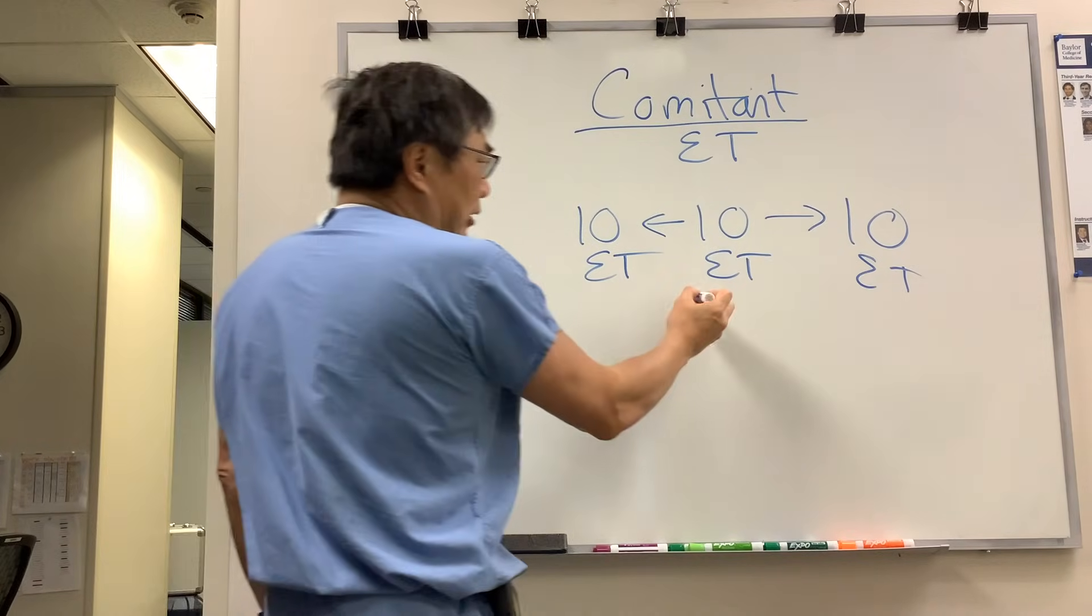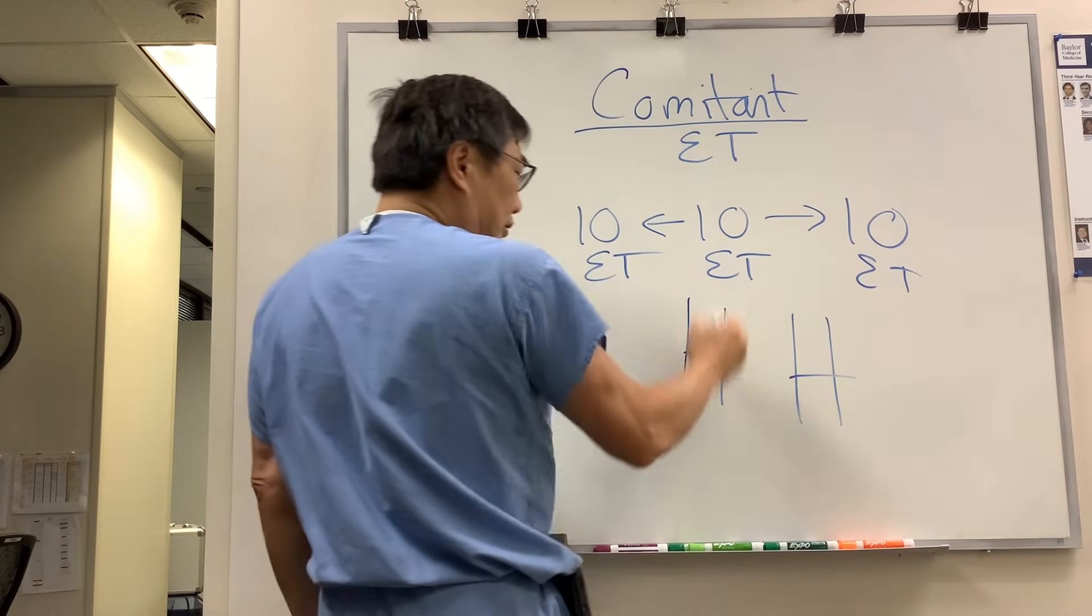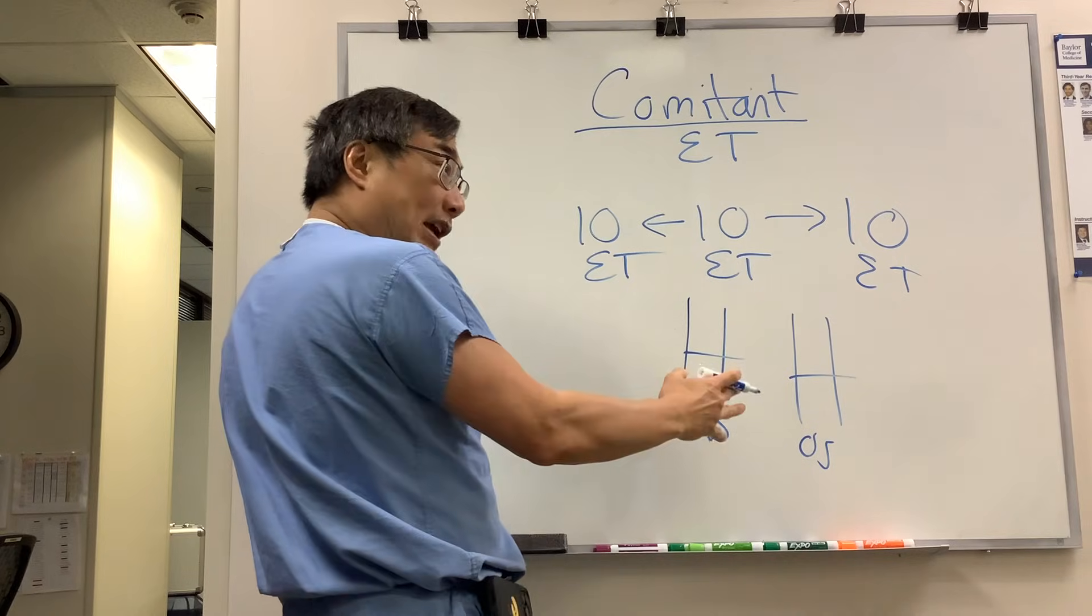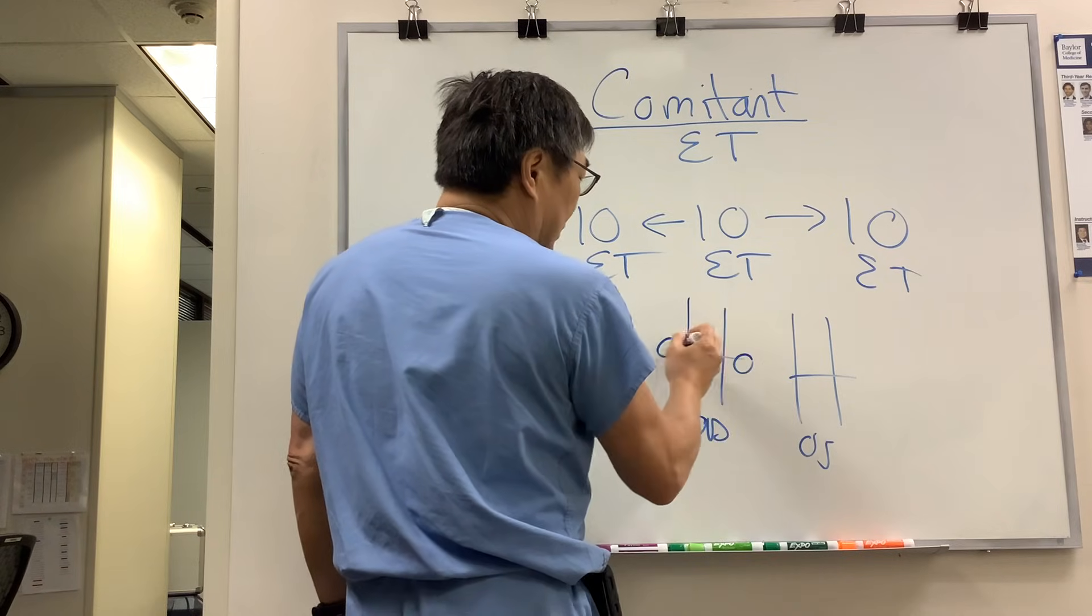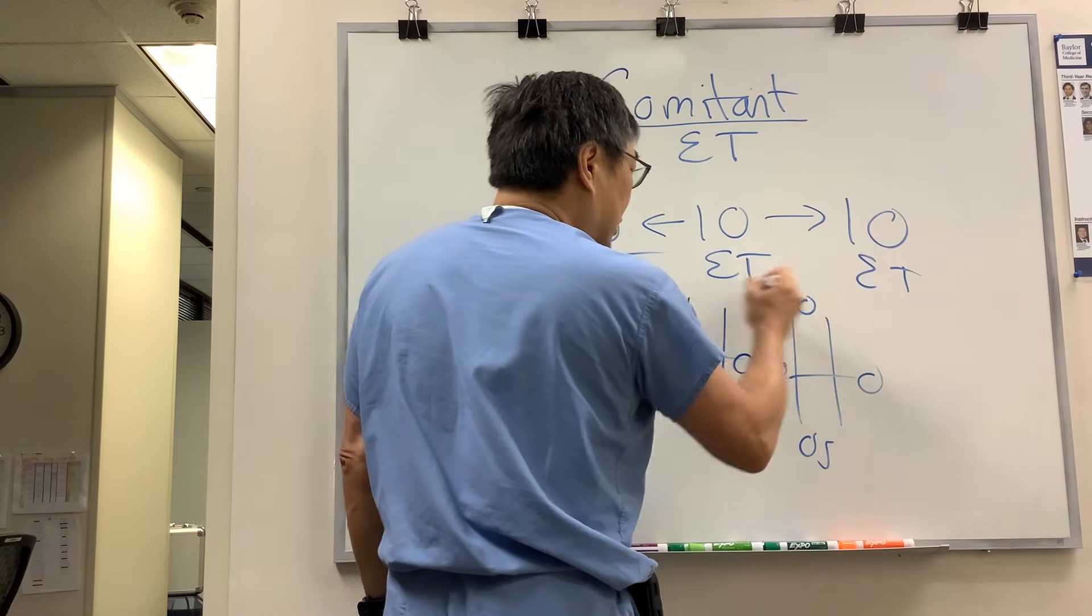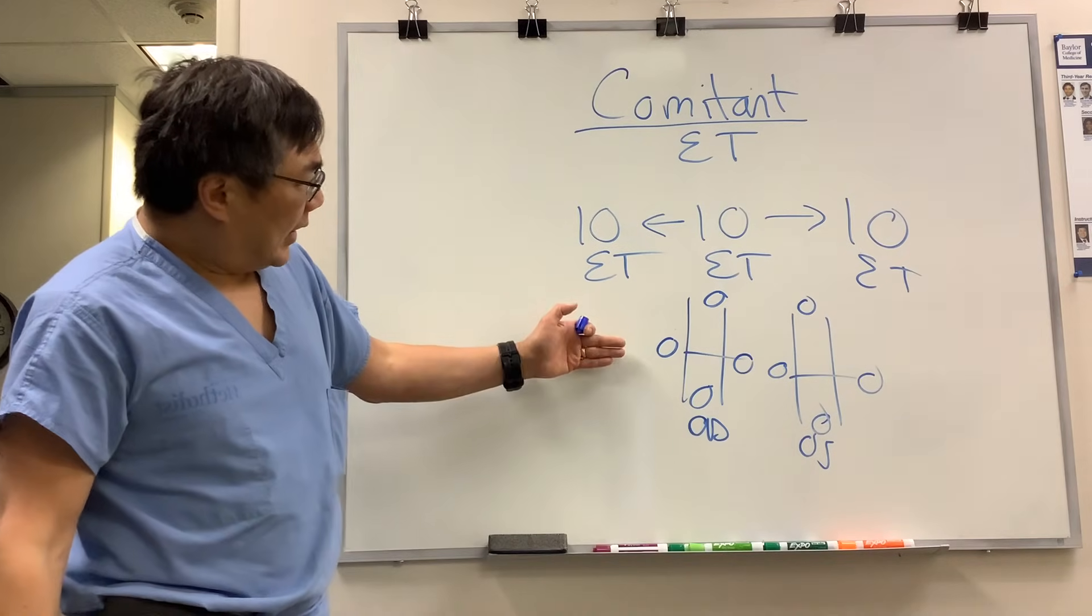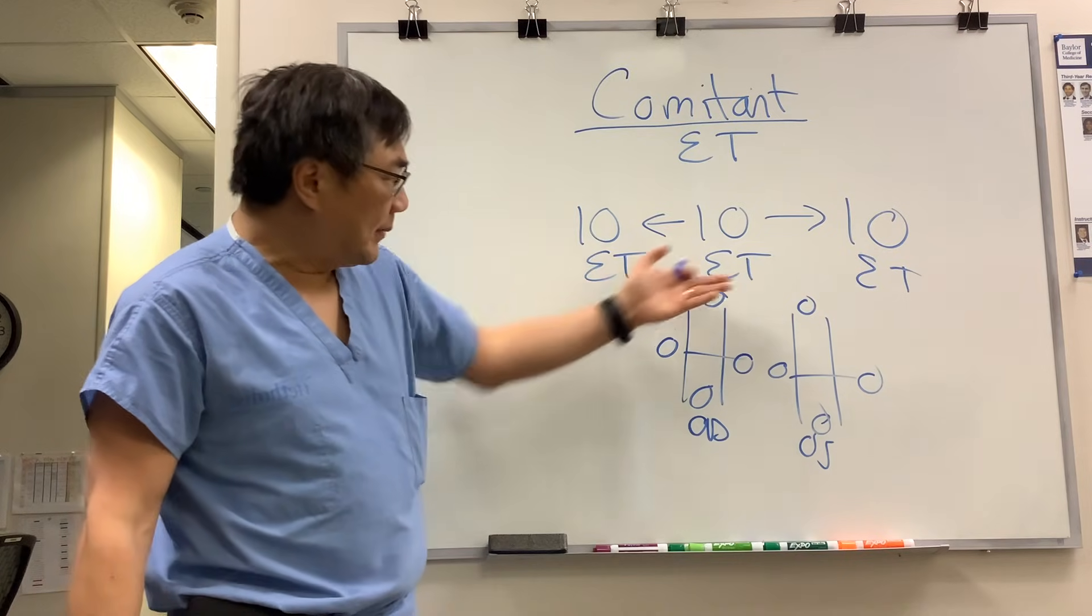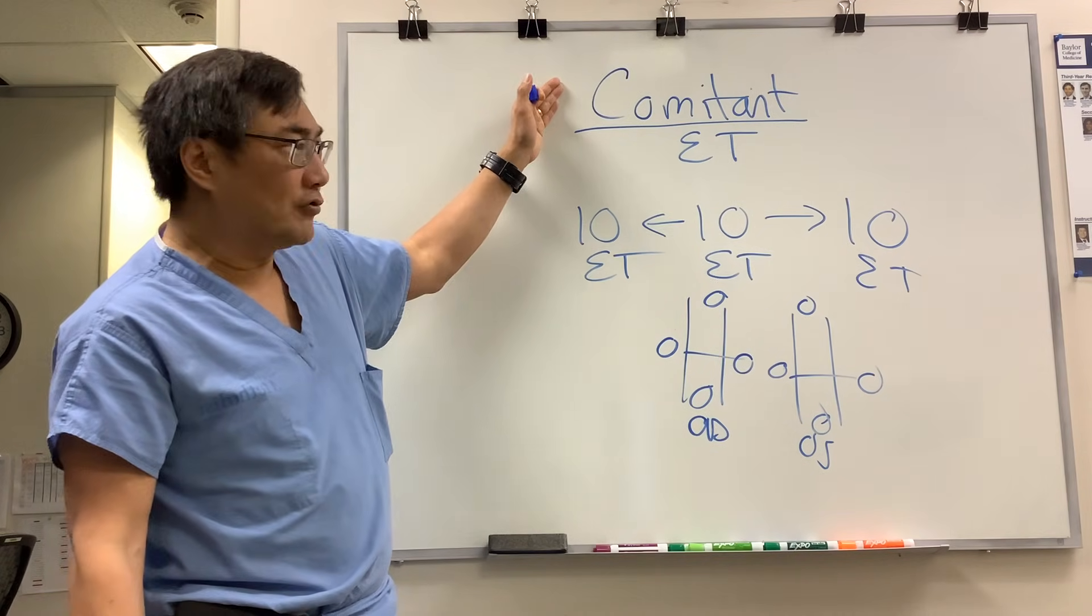What we're going to be looking for on the duction testing is OD and OS - we're going to be looking for a deviation and a restriction of movement. So in a comitant strabismus, the movements would be totally normal. You have a breakdown of the fusion, it causes the misalignment, you have full ductions and versions, that is a comitant strabismus.